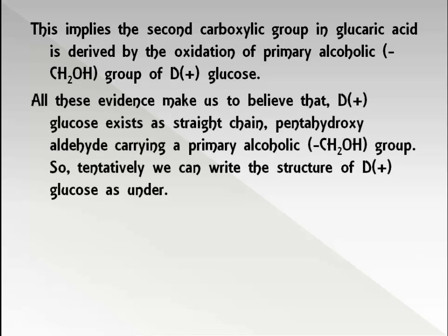All these evidence lead us to believe that D-glucose exists as a straight chain pentahydroxy aldehyde carrying a primary alcoholic group. So tentatively we can write the structure of D-glucose as a chain: CHO at C1, followed by CHOH groups at C2 through C5, and CH₂OH at C6.